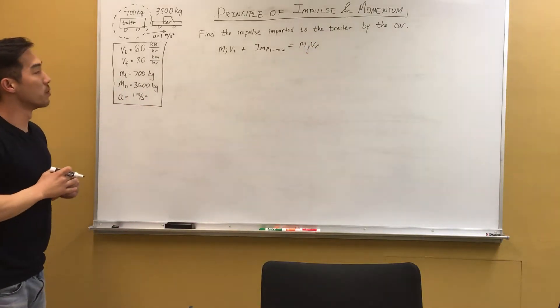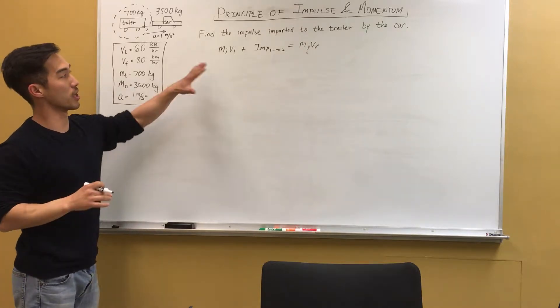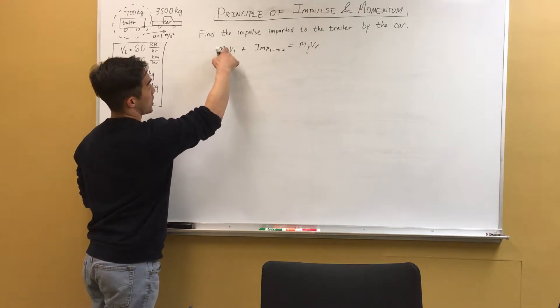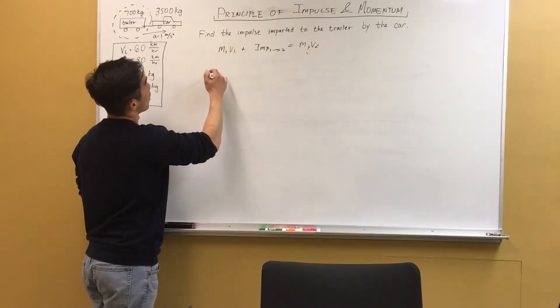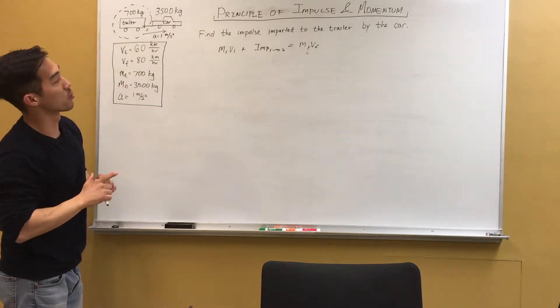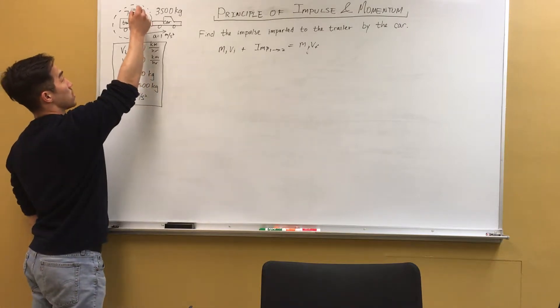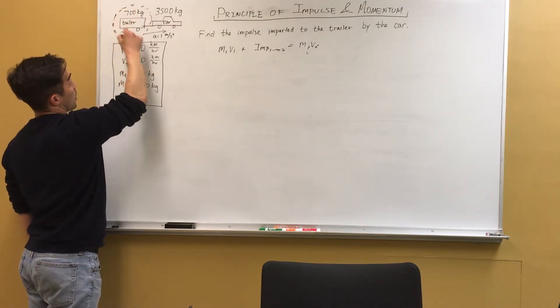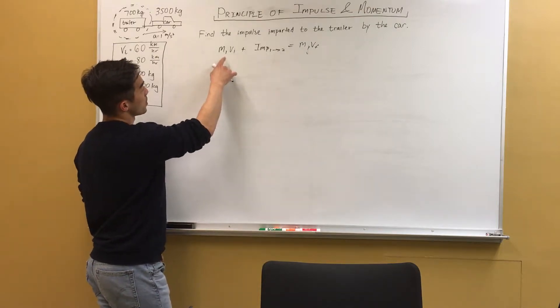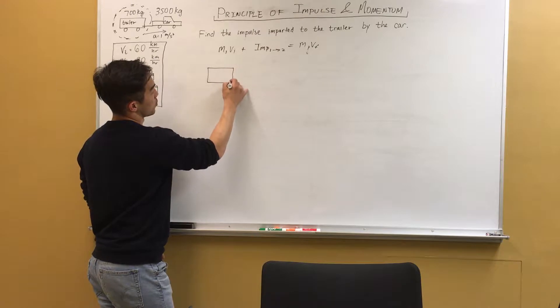So to make this problem easier, we can draw a diagram showing what actually happens in this equation. So M1V1. Actually, we have to first define the system. Because we're finding the impulse imparted to the trailer, we have to consider the trailer as the system.